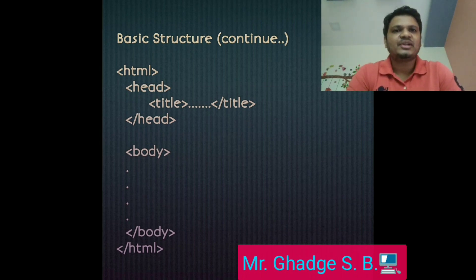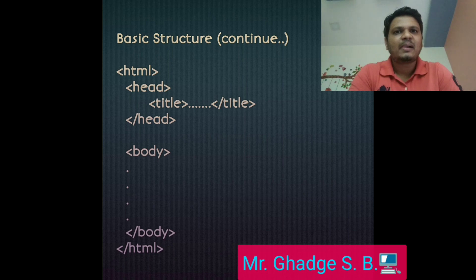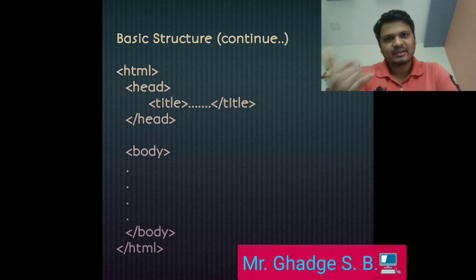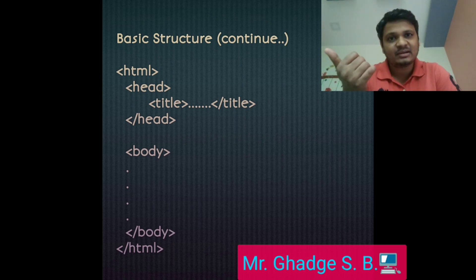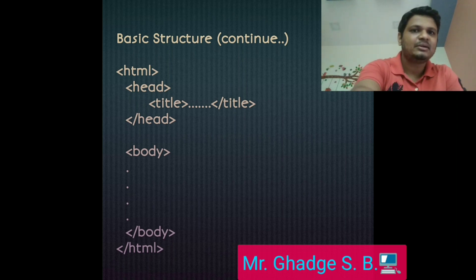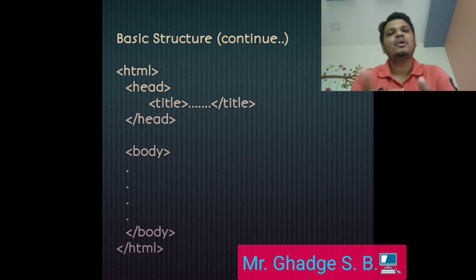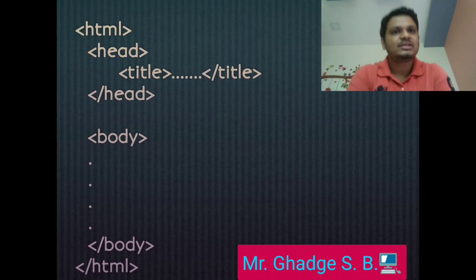This is the basic structure of an HTML document: opening HTML tag, then opening head tag. Inside the head section there is a title — opening title tag, title content, then closing title tag. After that the head section closes with a closing head tag. Then the body section starts with an opening body tag, body content goes here, then the body tag closes, and finally the HTML tag closes. This is the basic HTML structure.